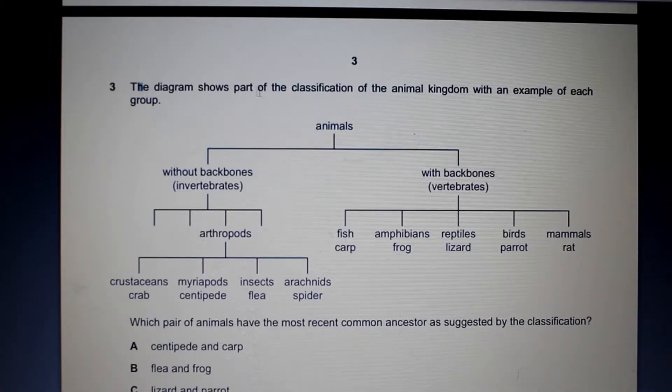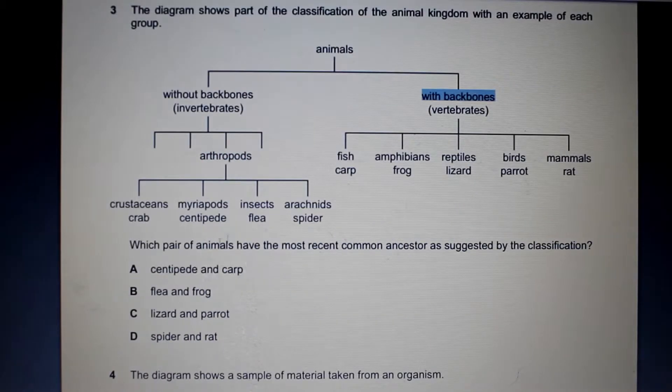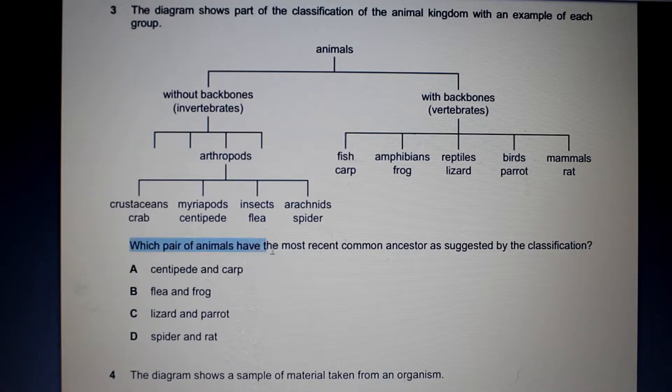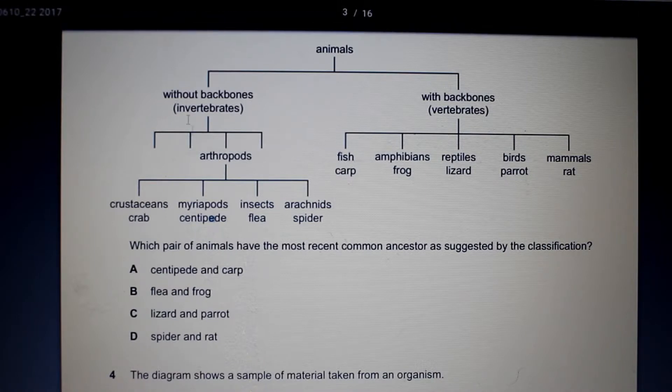The diagram shows part of the classification of the animal kingdom with an example of each group. So all animals are divided into animals without backbones and animals with backbones. The question asks us which pair of animals have the most recent common ancestor as suggested by the classification. So let's take a look at our options. Our options here is a centipede and a carp. We can find the centipede here under myriapods and carp we can find here under fish. They are not that closely related because they are literally under two different classification schemes.